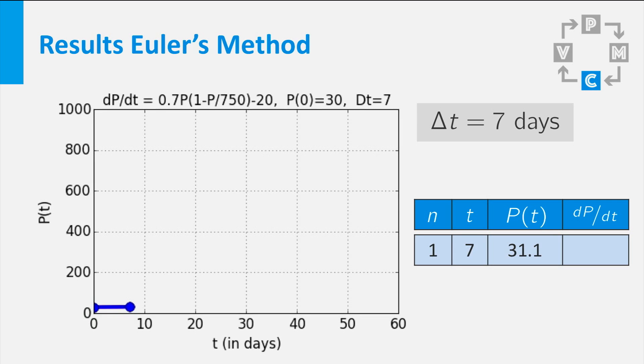So P is approximated by 30 plus 7 times 0.16 which equals 31.1.